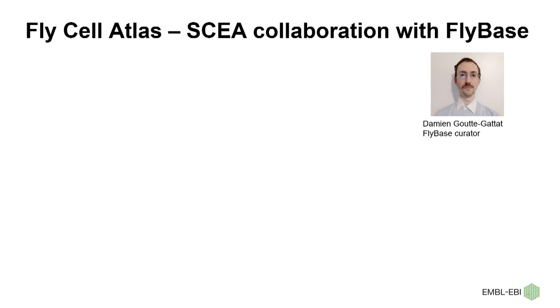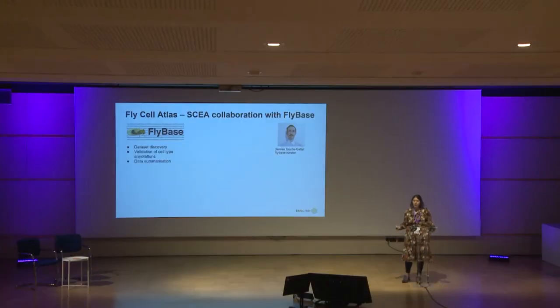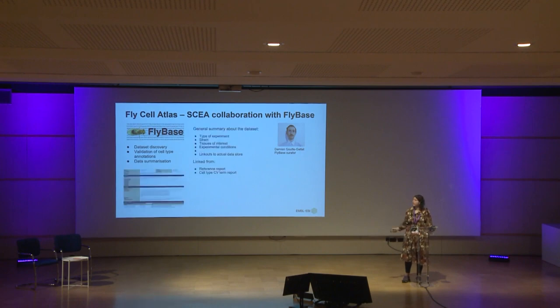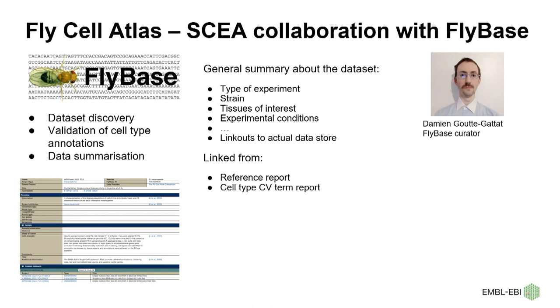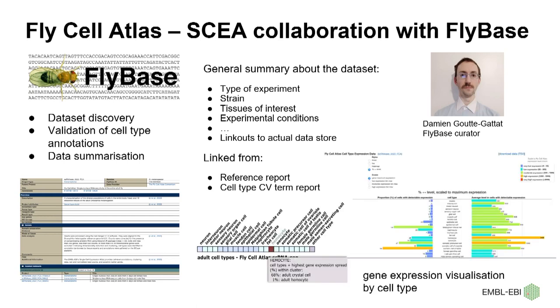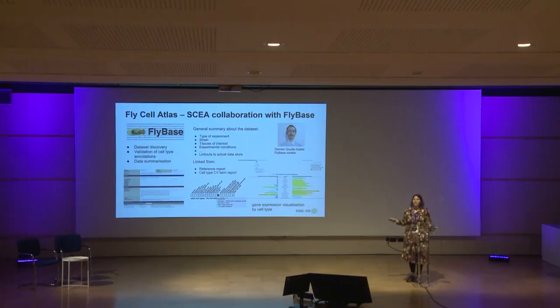We've been doing this in collaboration with FlyBase, and it's been really fun. Our collaborator within FlyBase, Damien, and the FlyBase collaborators have been really instrumental in helping us discover datasets which are important and of high value to the community. We get the datasets, they help with validation of cell type annotations, and they provide data summarisations — including type of experiment, tissues of interest, links to the data source, both the Expression Atlas side and the data archive. They also generate cell type specific reports on gene expression levels across different cell types in the tissue, and feed that back into the resources. So it all goes around in a big circle, and everybody benefits.